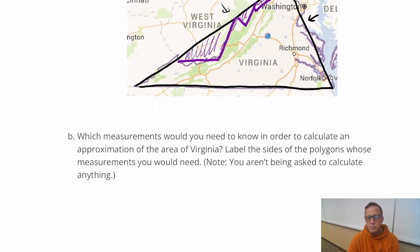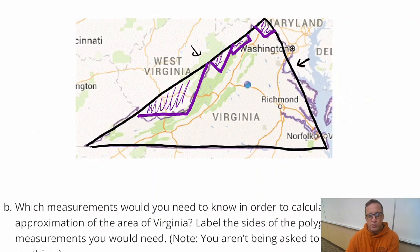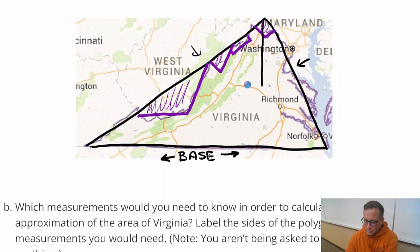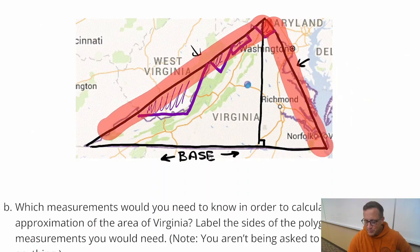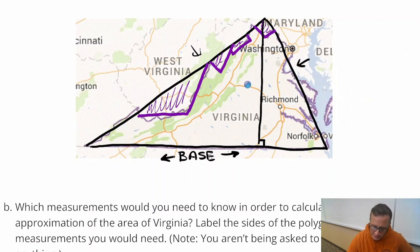Which kind of leads into the next question. Question B says, which measurements would you need to know in order to calculate the approximation of the area of Virginia? If we want to find the big, the largest triangle, the first thing I drew there, you're going to need the base of that triangle, from there to there. And on Virginia, that southern border is pretty straight. That's the base. And then you need the height. Now, the height has to be perpendicular to the base. So it's got to be perpendicular. So we need the height there. I'm going to put H for height.